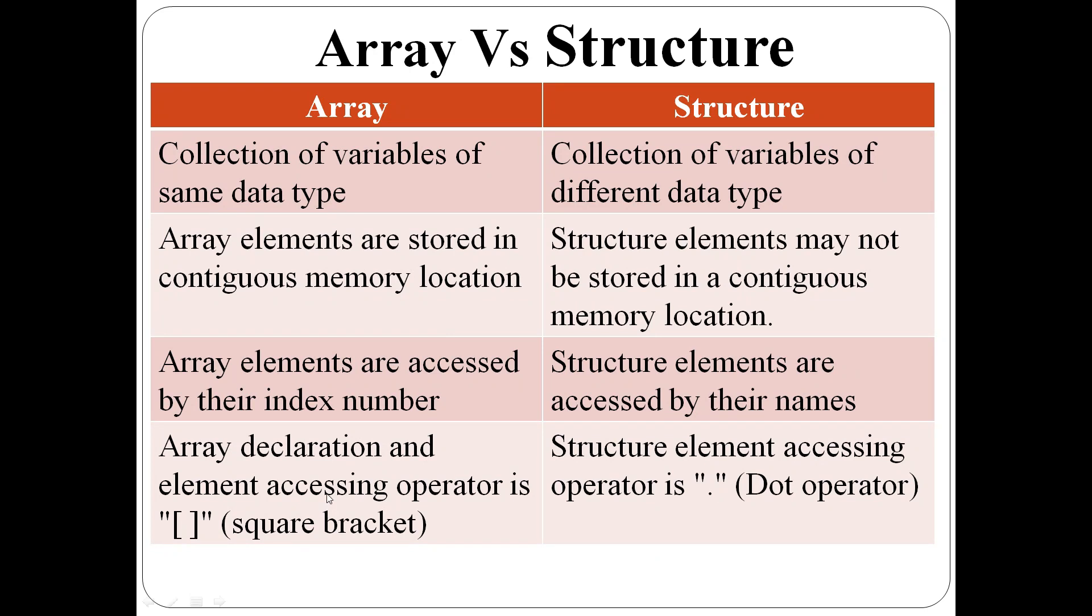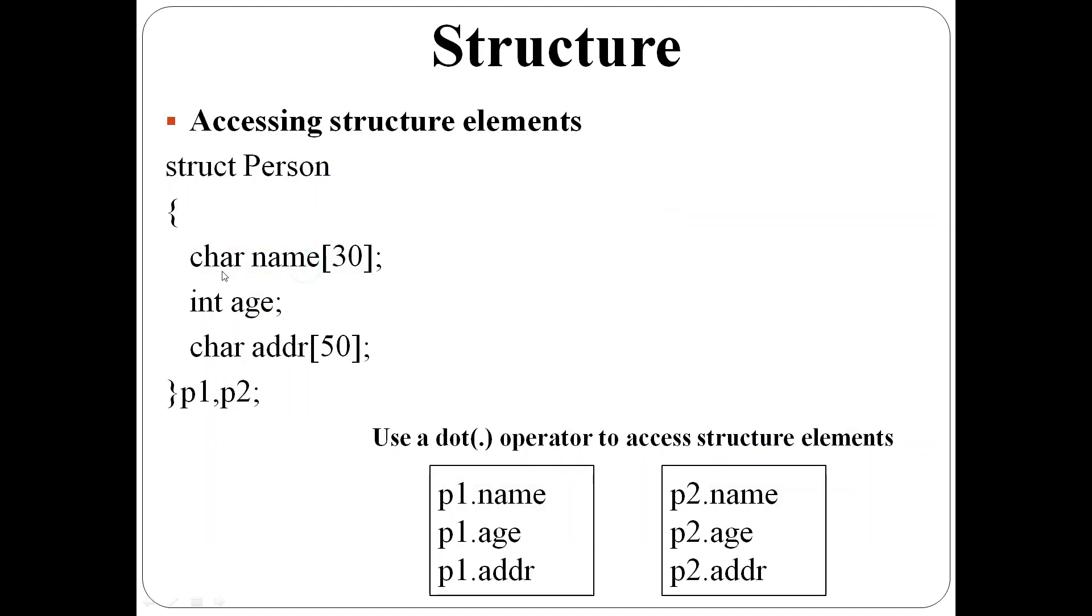Difference between arrays and structures. Array is a collection of variables of same data type. One integer array, all variables are integers. One character array, all elements are characters. But structure is a collection of variables of different data type. Here, name is character array, age is integer, addr again character array.